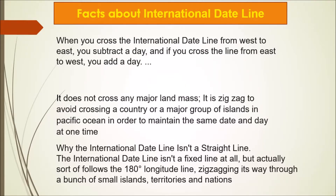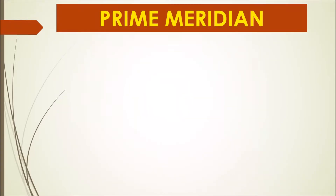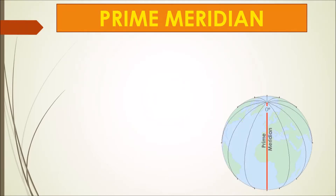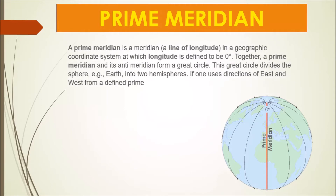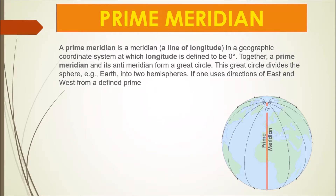The international date line isn't a fixed straight line, but actually sort of follows the 180-degree longitude line, zigzagging its way through a bunch of small islands, territories, and nations. Next is the prime meridian.